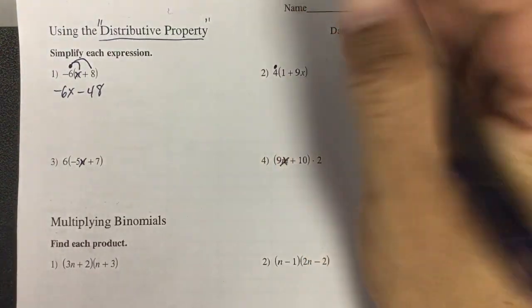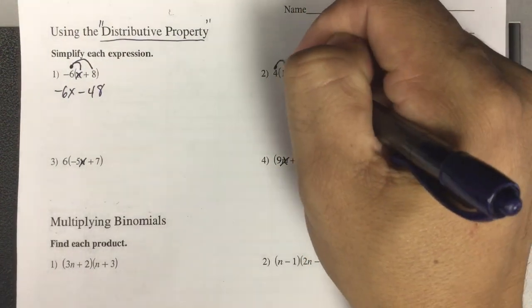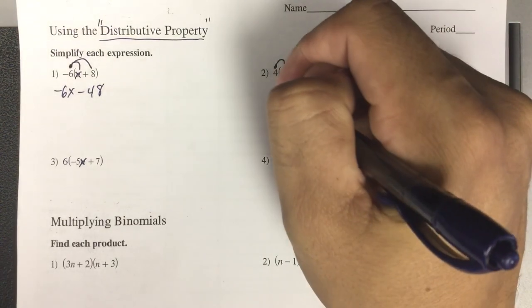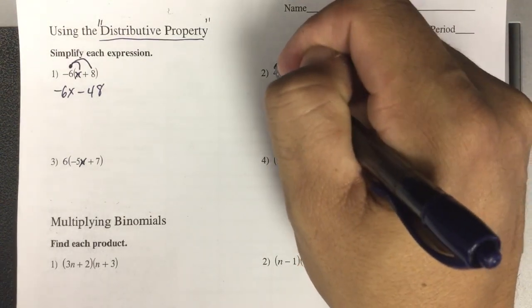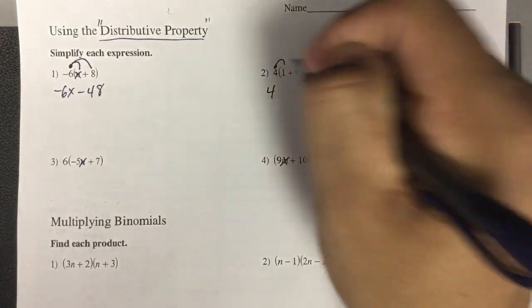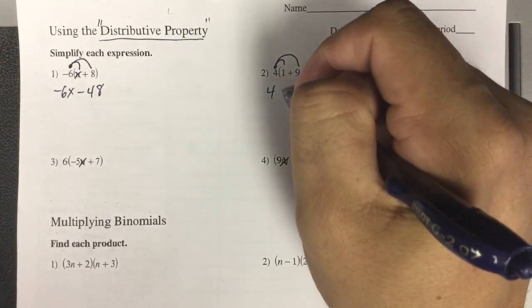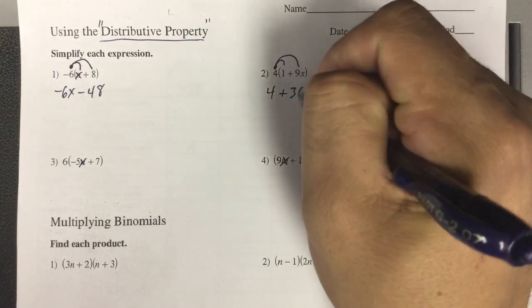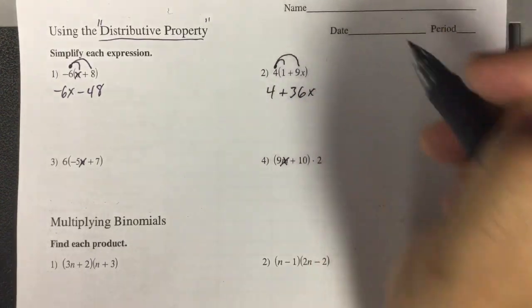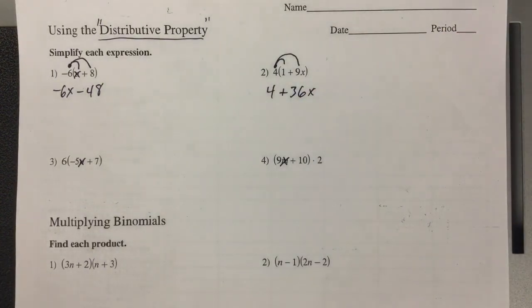Again, right here, the 4. If I'm going to take that, 4 times 1 is... it's not negative 4. 4 times 1 is 4. 4 times 9x is 36x. That's a positive 36 with the x. The x has to come down.